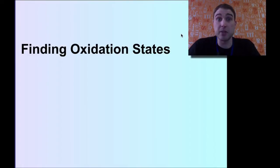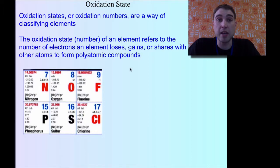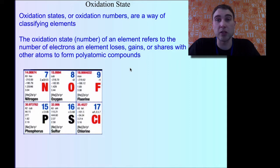Today on Flipping Science we're looking at finding oxidation states and oxidation numbers. This is a handy thing to do because it tells you how many electrons are being lost, gained, or shared with other atoms in polyatomic compounds. It also gives you a hint about what's going to happen in terms of a redox reaction.